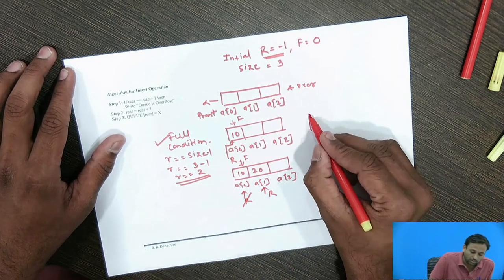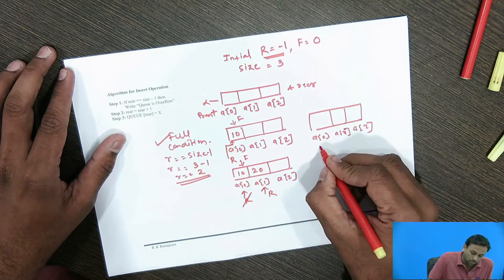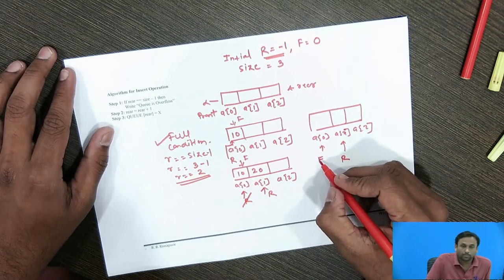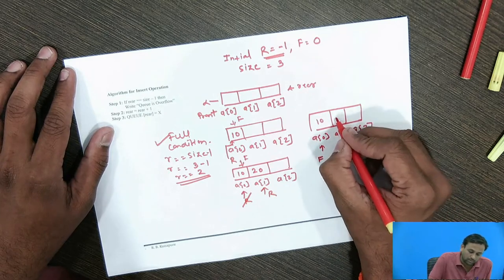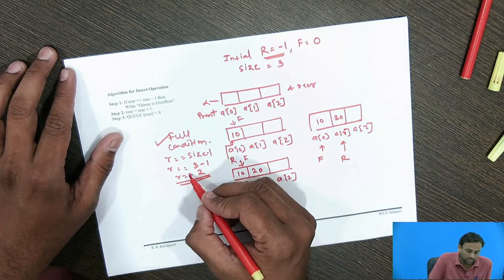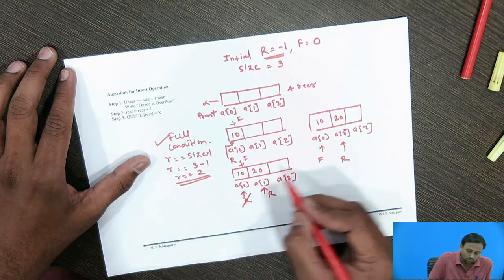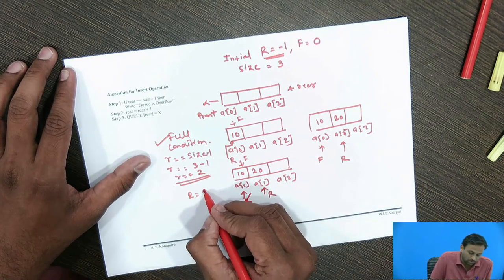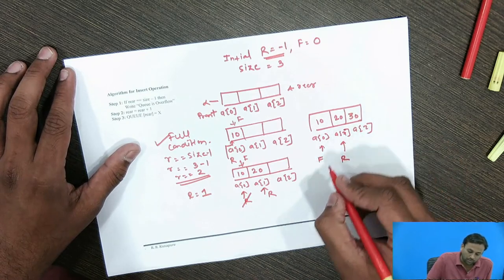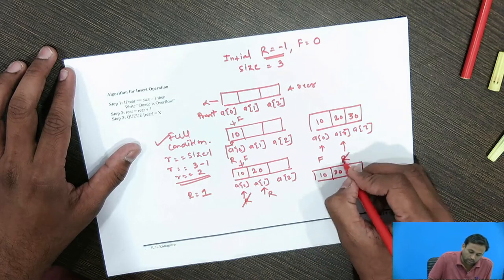Suppose one more element needs to be inserted. We have a[0], a[1], a[2], with front pointing to the first element 10 and rear pointing to 20 at a[1]. We check the full condition again: rear == size - 1, which is 2. Rear is pointing to 1, so this condition is not satisfied and we can insert 30. After inserting 10, 20, and 30, rear is incremented by 1.